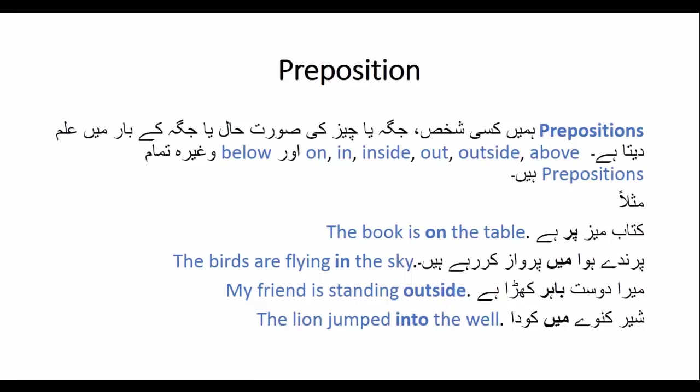یہاں صرف آپ کو ایک ریویو دیا جا رہا ہے کہ پارٹس آف سپیچ کیا ہوتے ہیں اور ان کا کام کیا ہے۔ مثال: کتاب میز پر ہے — یہ book کی position بتا رہا ہے کہ کتاب کہاں ہے۔ پرندے ہوا میں پرواز کر رہے ہیں — Birds are flying in the air — یہاں 'in' ایک preposition ہے جو بتا رہا ہے کہ پرندے کہاں اڑ رہے ہیں۔